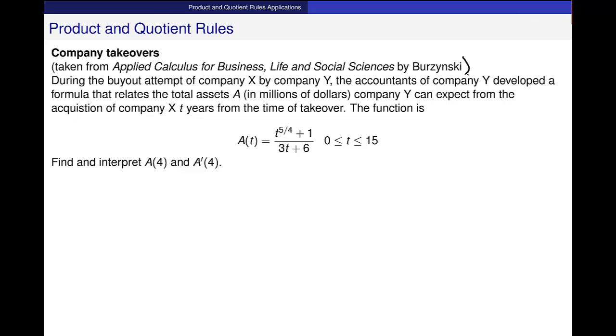This is from your textbook. During the buyout attempt, we have two companies, Company X and Company Y. Company Y is buying Company X. The accountants of Company Y develop a formula that relates total assets. This A is total assets, in millions of dollars, that Company Y can expect from the acquisition of Company X.